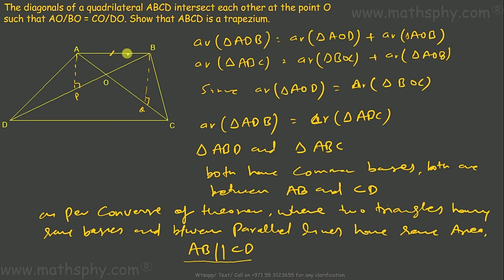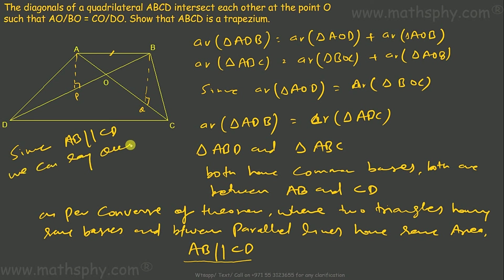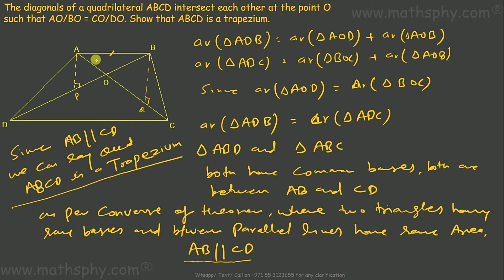Since AB is parallel to CD, we can say that quadrilateral ABCD is a trapezium, because a trapezium has one pair of opposite sides that are parallel. We have proved AB is parallel to CD, which means quadrilateral ABCD is a trapezium.